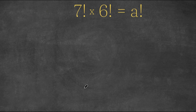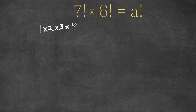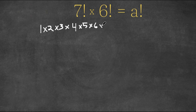Welcome back to Click Academics. In today's video we have the equation 7 factorial times 6 factorial equals a factorial and we want to find the value of a. First let's rewrite these. 7 factorial is the same thing as 1 times 2 times 3 times 4 times 5 times 6 times 7, and we are multiplying this with 6 factorial.